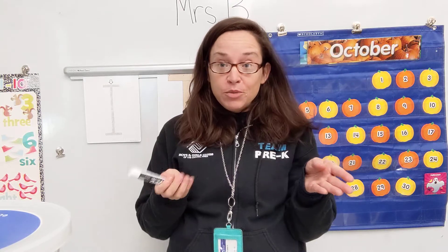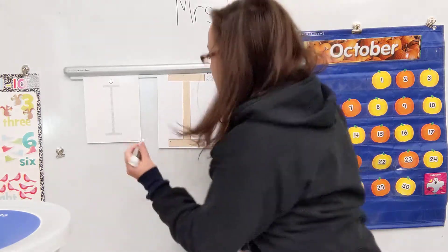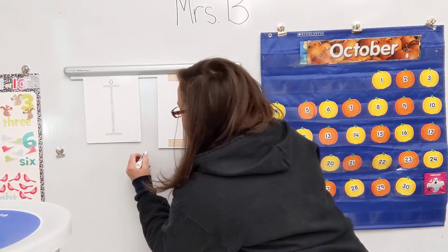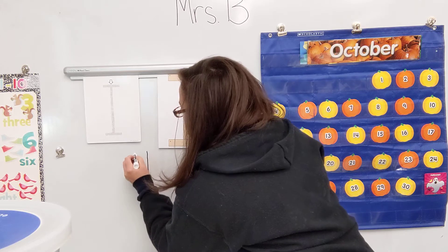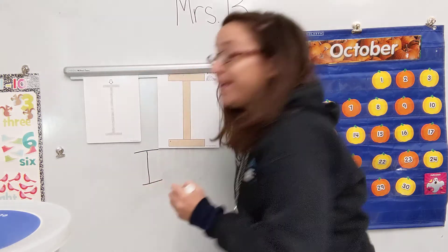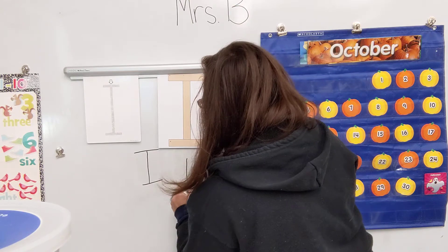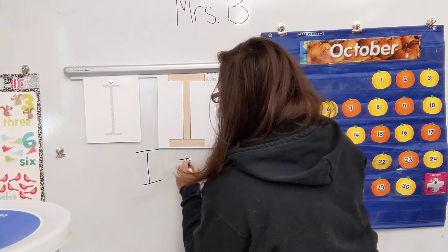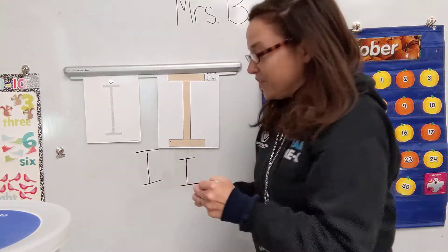So now I want you to practice. Let's do it together: big line down, little line, little line. That's how you make an I. Big line down, little line, little line.